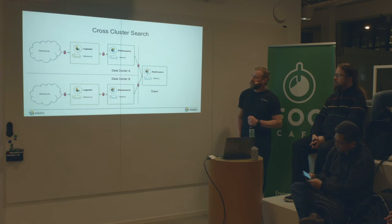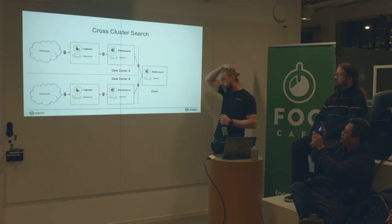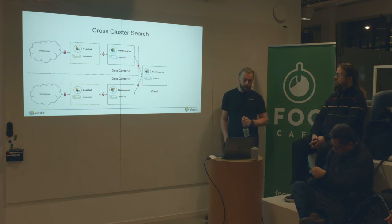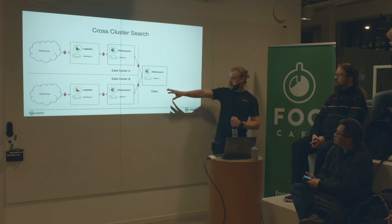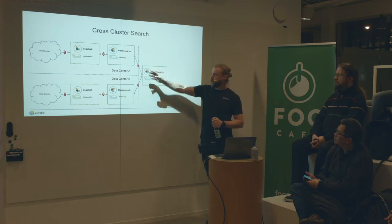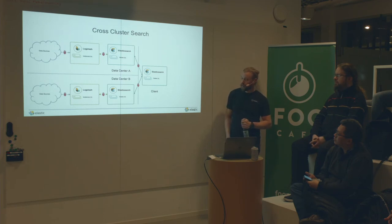There's also something called cross-cluster search, for when you have several Elasticsearch clusters and want to query them from one location. The older tribe node didn't scale well. In version 6.x we introduced a dedicated cross-cluster search node — essentially a dedicated cluster that performs searches across different clusters. This is useful when you have separated clusters and want to search across them.